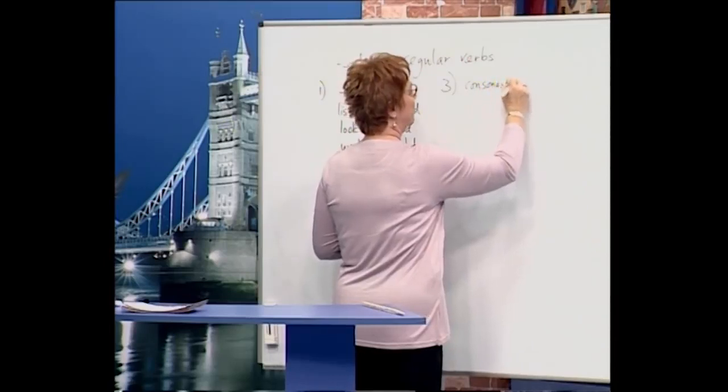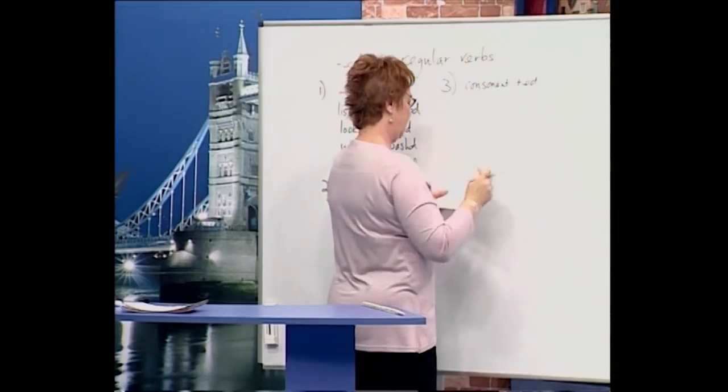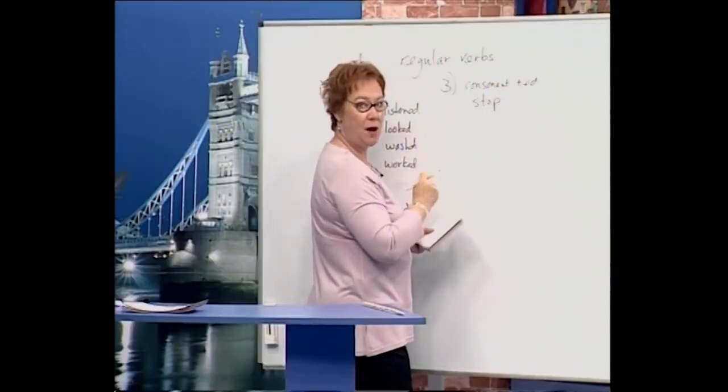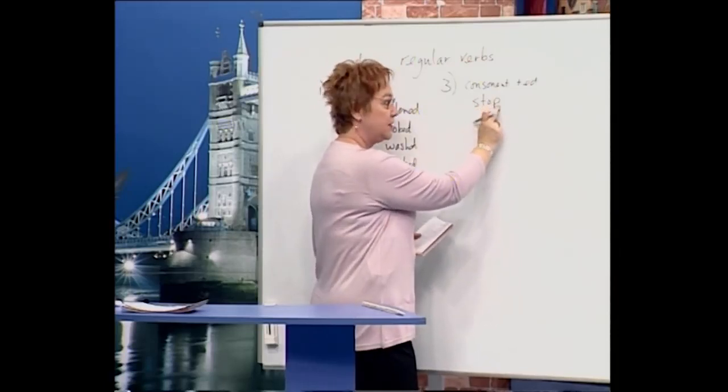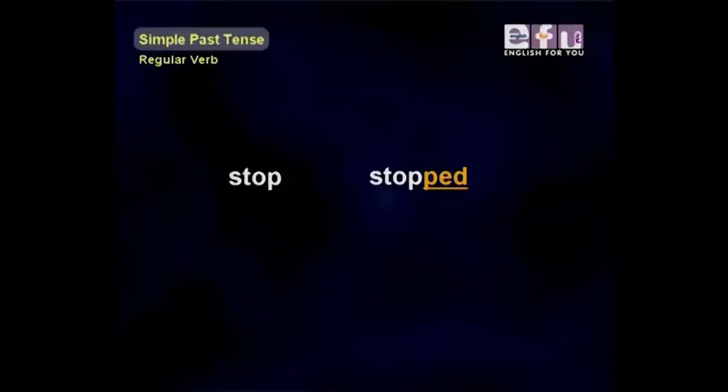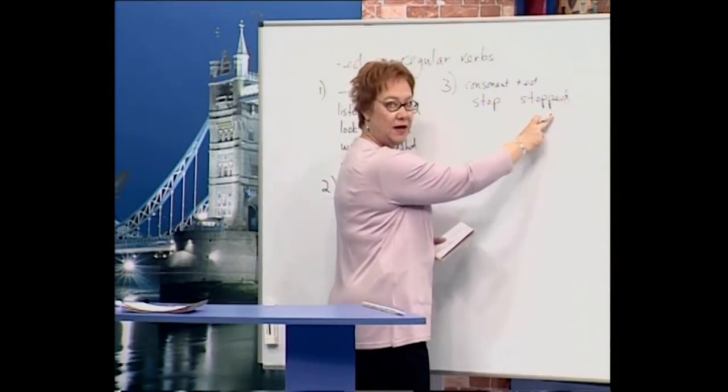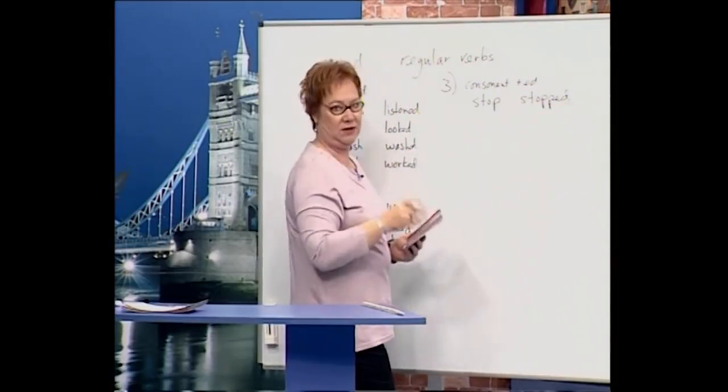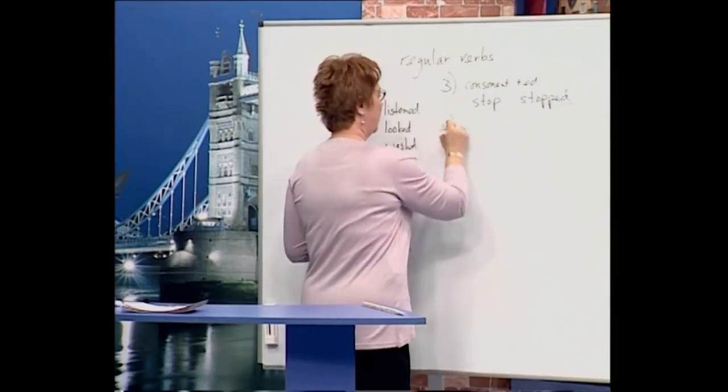Here's some examples: stop, stop. It's a short word with a consonant and a vowel. So this one becomes stopped, stopped, s-t-o-p-p-e-d. We need this for the sound. We'll see some more examples later.